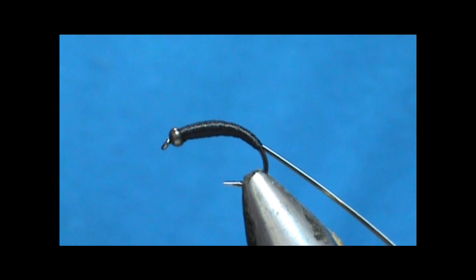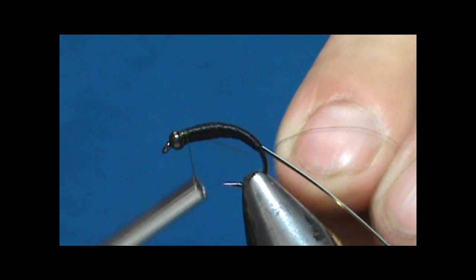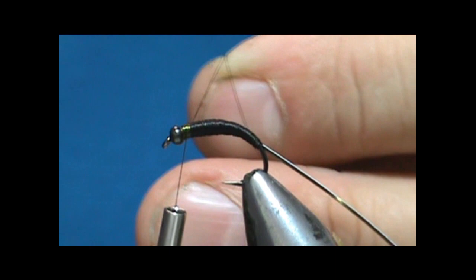I'm going to switch my thread to an olive thread and this is 70 denier, and we're just going to leave it attached to the top here.